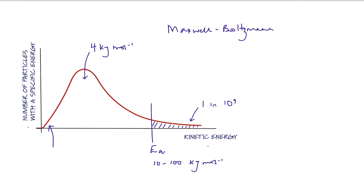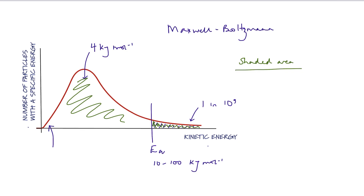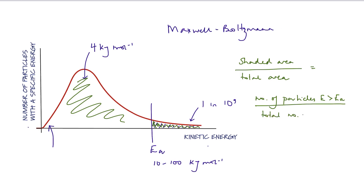If the area under the curve is proportional to the total number of particles, then the fraction of particles with energy greater than activation energy is given by the ratio of the shaded area — this area here under the curve — divided by the total area under the curve. This equates to the number of particles with energy greater than the activation energy, divided by the total number of particles.